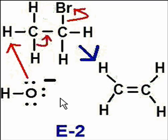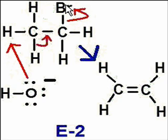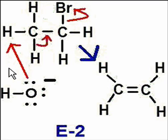Now let's just check if the arrows are making sense. We start with the lone pair on the hydroxide, which is attacking this hydrogen. This is the right hydrogen because in an E2, we have to count to three from the halide. So if I look at this bromine, I count one, two, three. So this particular hydrogen is eligible for undergoing the E2 elimination.